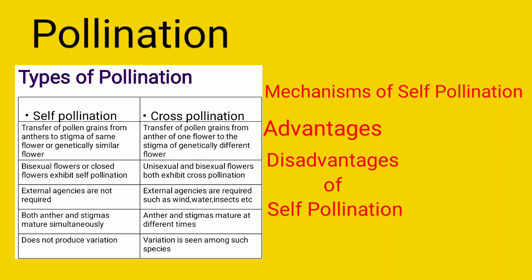Then we discussed about the differences between the two types of pollination. We also discussed about the different mechanisms that a self-pollinated flower adapts, such as autogamy in case of cleistogamous flowers, chasmogamous flowers, and also for birth pollination. Then we discussed about the advantages and disadvantages of self-pollination.